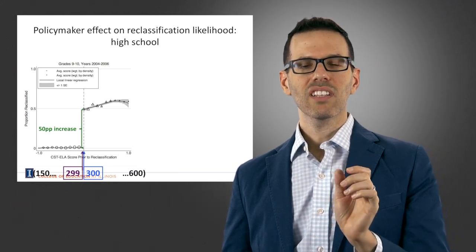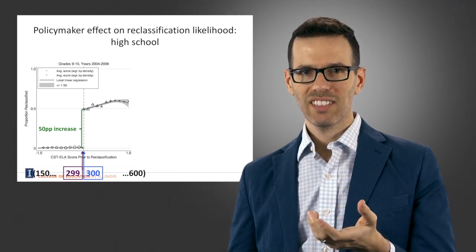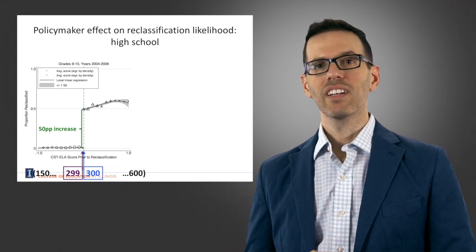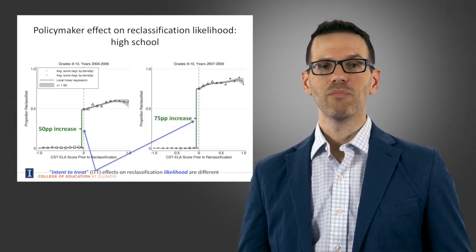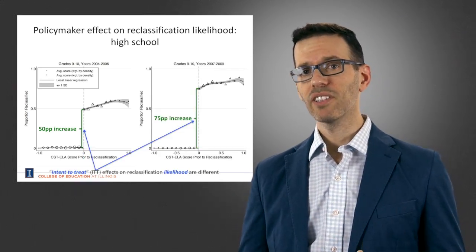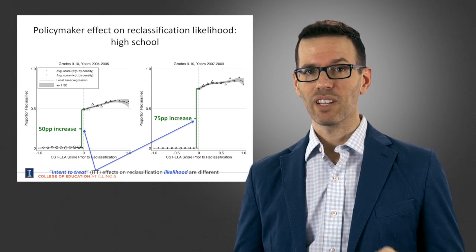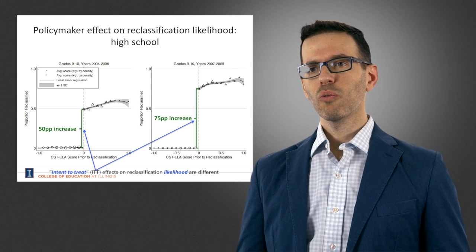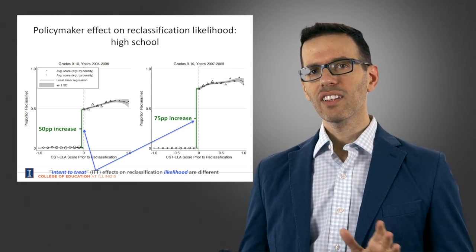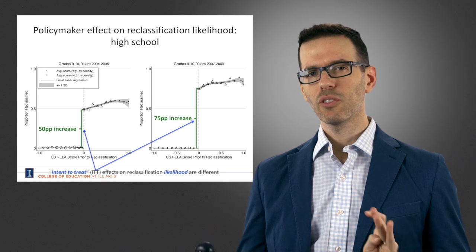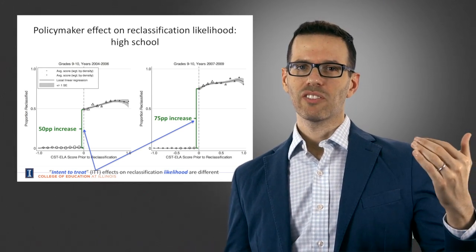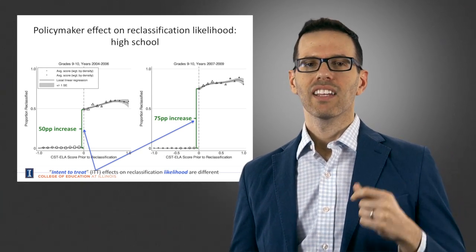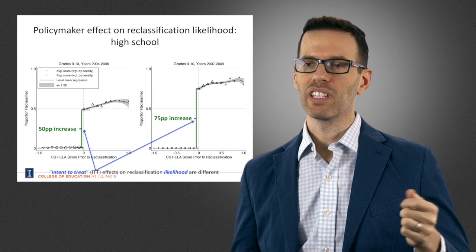That was the pre-2007 period. In the post-2007 period, there is also an increase in reclassification likelihood associated with that one extra point, but here it is a 75 percentage point increase. This tells us the two policy periods have different reclassification likelihoods — there is more chance of being reclassified in the later period. Our analyses will account for that through the instrumental variable approach.